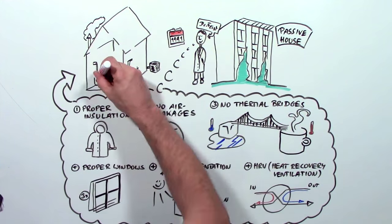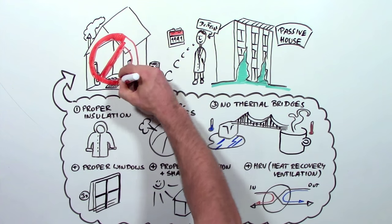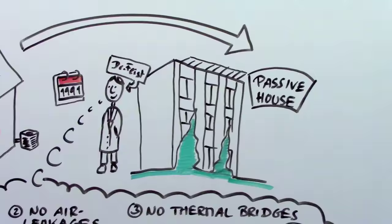Add all these things up and it turns out your house doesn't need a heater or air conditioner. So where does the heat come from?